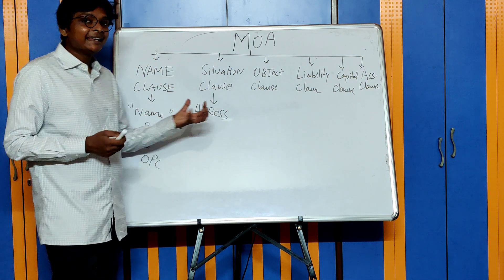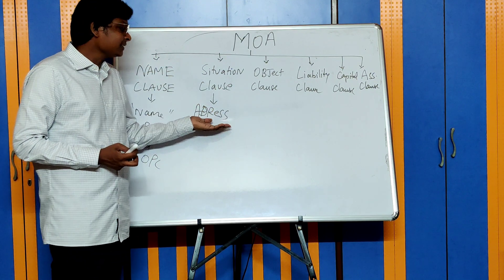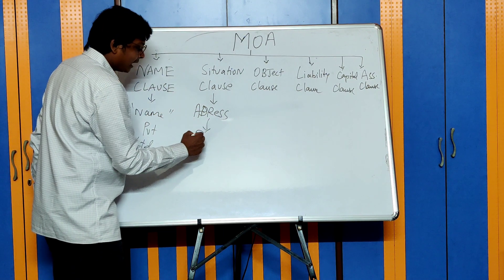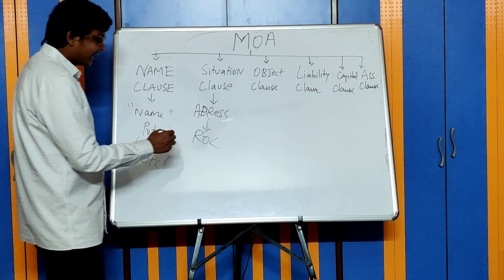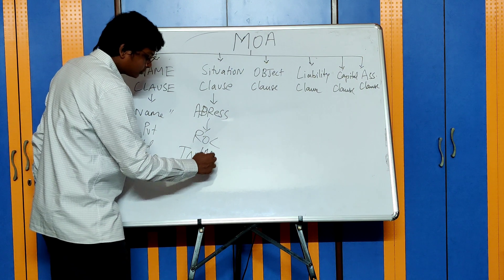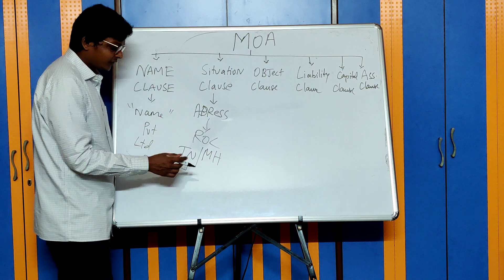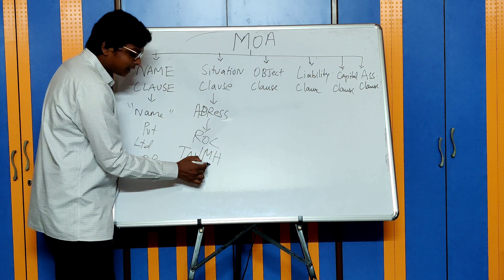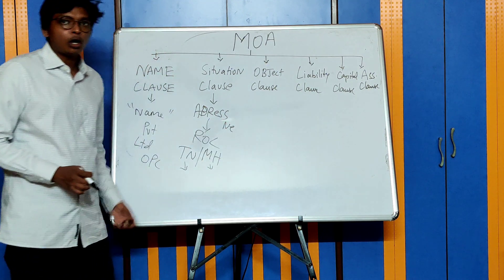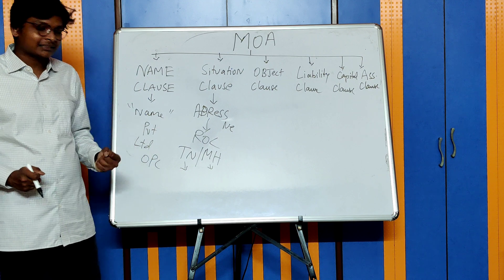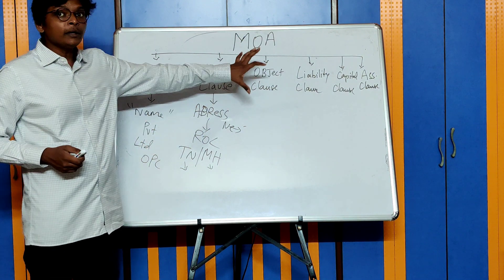Next is the Situation Clause, which tells the address of the registered office of the company — in which state the registered office is located. You need to register with the ROC of each state. Every state in India has one ROC, except Tamil Nadu and Maharashtra, which have two each — Tamil Nadu has offices in Chennai and Coimbatore, Maharashtra has offices in Mumbai and Pune. The north-eastern states together share only one ROC office since business activity there is lower.